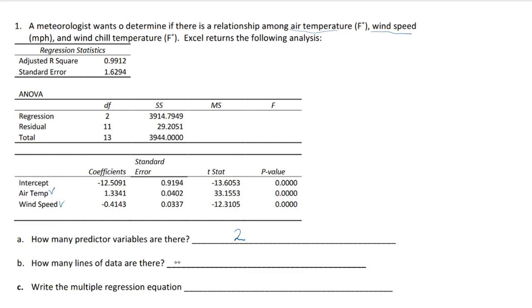Now how many lines of data are there? The usual Excel regression analysis gives you that value. But here because it is not given you have to figure it out from the degrees of freedom. This question is really asking you about whether you know the concept of degrees of freedom for multiple regression.